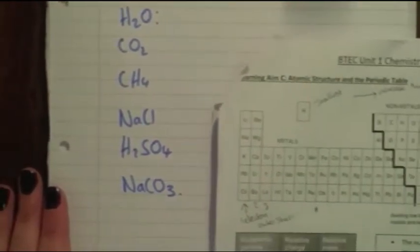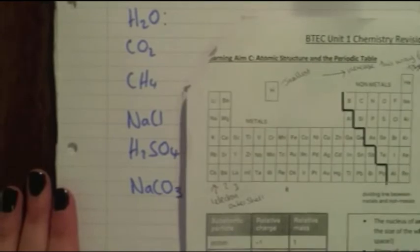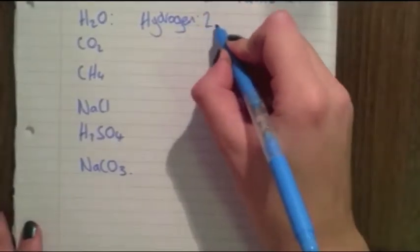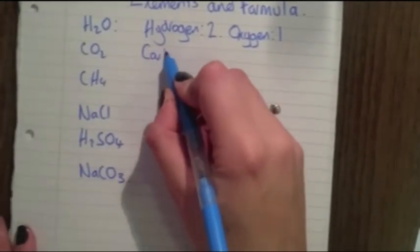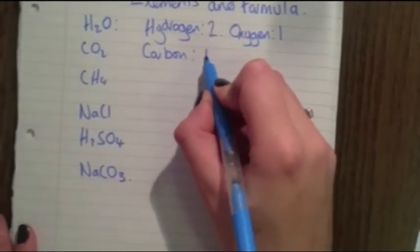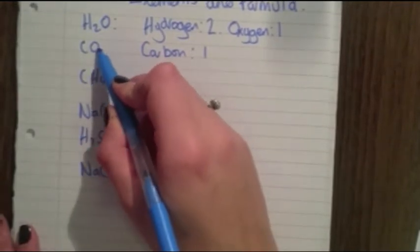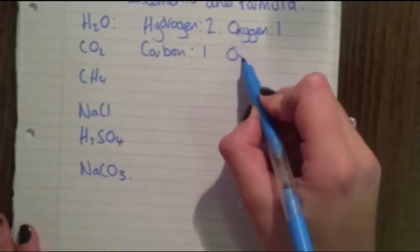We can use the periodic table to help us tell which elements are present in the compounds. For example, in H2O we can see there are two hydrogens and one oxygen. For carbon dioxide, we can see there is one carbon — because there's no number by it we know there's one — and there are two oxygens, denoted by the number two by the oxygen.